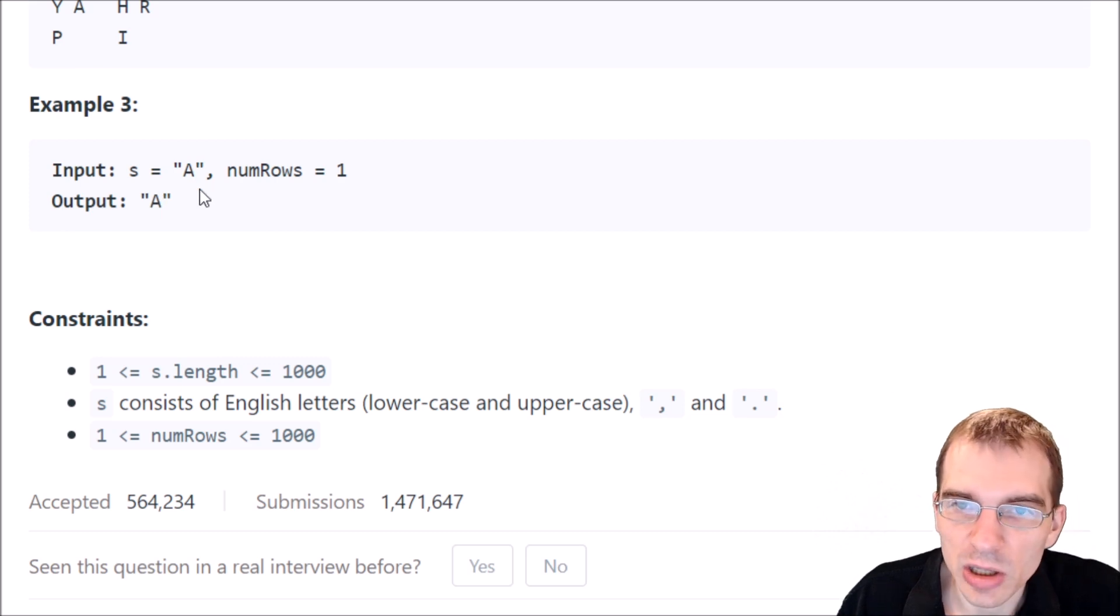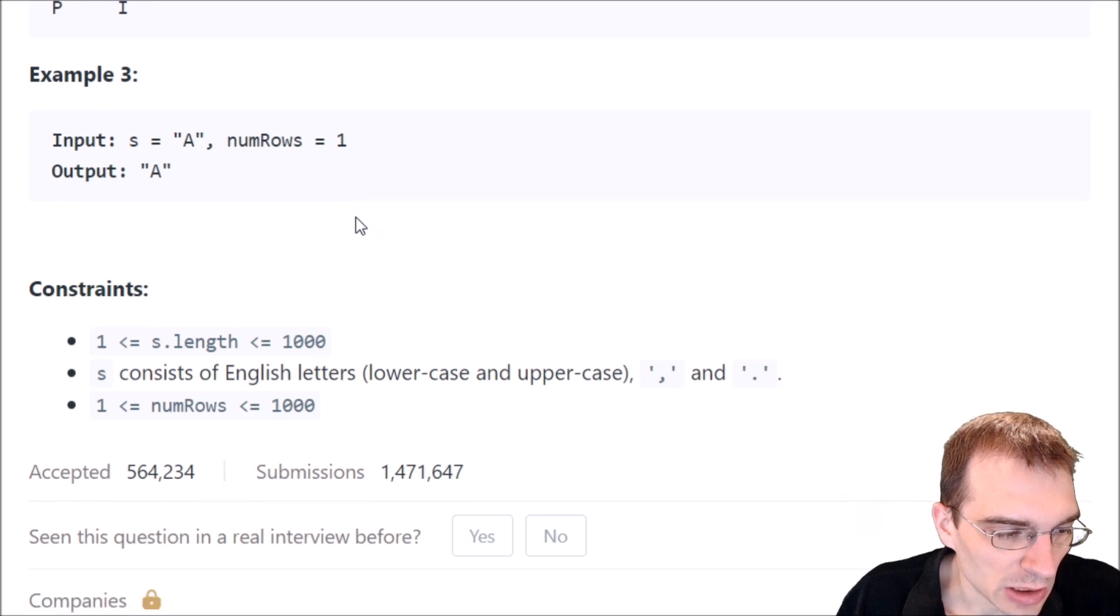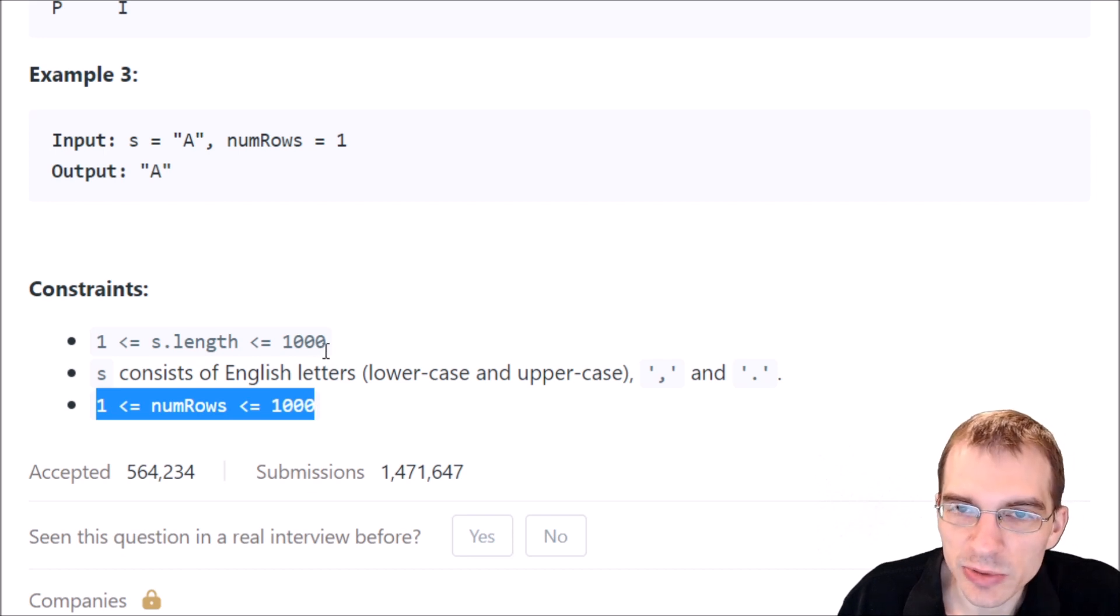We could just output the input because if it's only one row, there's no zigzags happening. The constraints here are input is going to be between length one and 1000. The string will only consist of English letters, lowercase and uppercase, along with potentially commas and periods. The number of rows will also be between one and 1000.